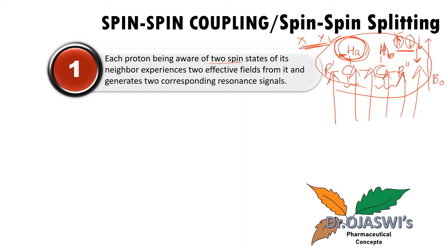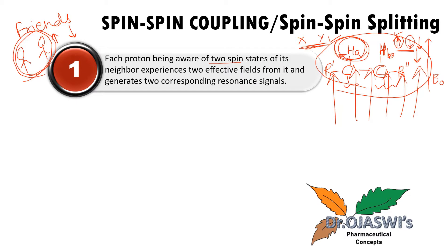A good analogy is friendship. Suppose you two are friends. If you are going somewhere having fun and your friend is in a good mood, the overall atmosphere is good. But if your friend's mood is not good, the atmosphere felt by you could be different. It is the same way — it depends on the neighboring proton, the proton present on the neighboring carbon, which decides the peak splitting for one particular proton.